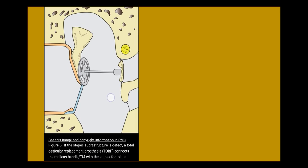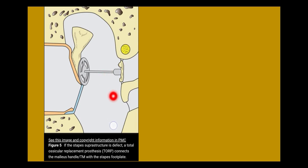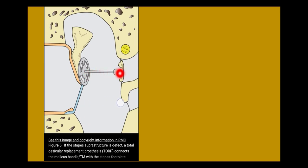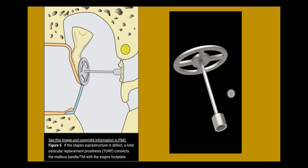When the stapedial superstructure is completely absent and only the footplate is remaining — with an absent incus — then a total ossicular replacement prosthesis is employed. It connects the malleus handle with the stapedial footplate. This sits on the footplate and connects with the malleus.